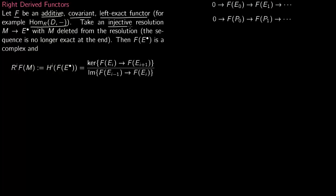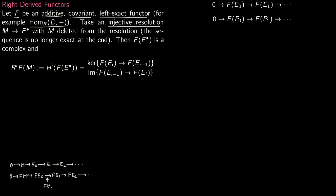For covariant functors you take injective resolutions. So you do an injective resolution — you have a resolution like this. This is an injective resolution. Then you apply the functor F to it. Since this is a covariant functor, the arrows are preserved. And this functor is left exact, so you have this injective map right here.